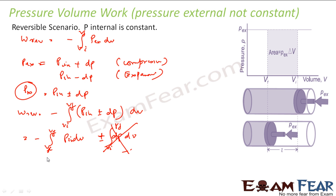So what we get is W_reversible = −∫P_internal dV from V_i to V_f. Now P_internal is also not constant — it is a variable. But since we are integrating with respect to V, it is good to write P_internal in terms of V. So we want to express P_internal as a function of V.